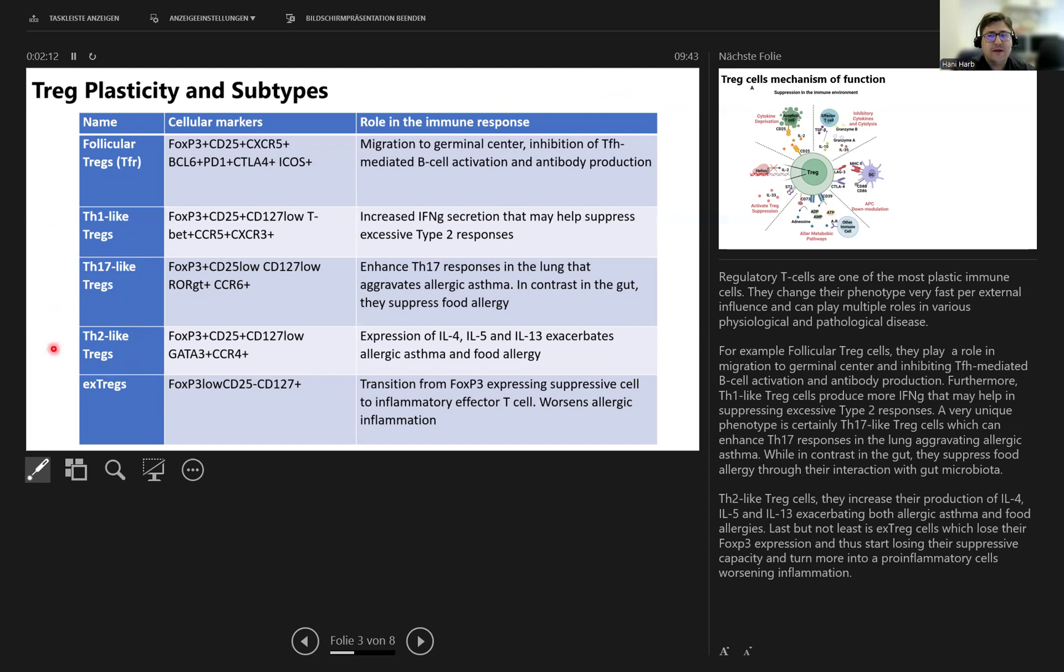Furthermore, TH2-like T-reg cells increase the production of IL-4, IL-5, and IL-13, exacerbating both allergic asthma and food allergies. Last but not least, ex-T-reg cells lose the expression of FOXP3 and thus start losing the suppressive capacity and turn more into pro-inflammatory cells, worsening inflammation.